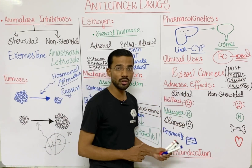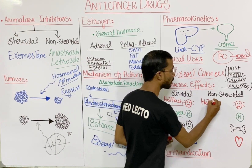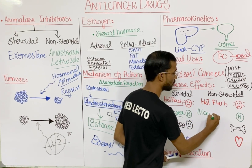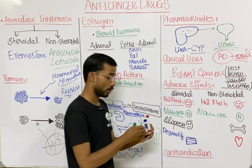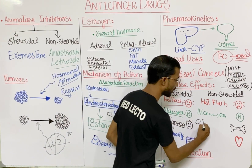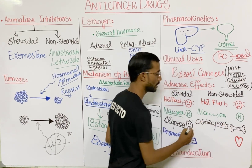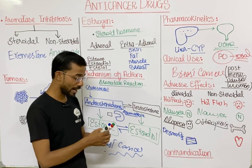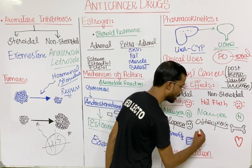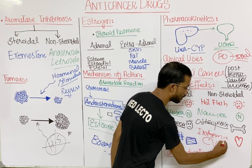For the non-steroidal drugs anastrozole and letrozole, similar adverse effects are seen: hot flashes and nausea. Additionally, osteoporosis — a decrease in bone mineral density — can also occur, as well as ischemic cardiovascular problems.